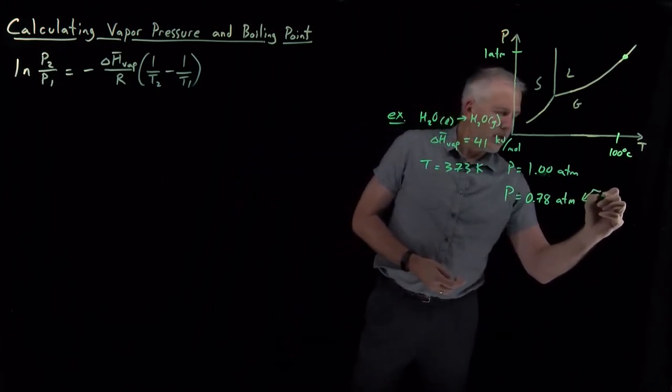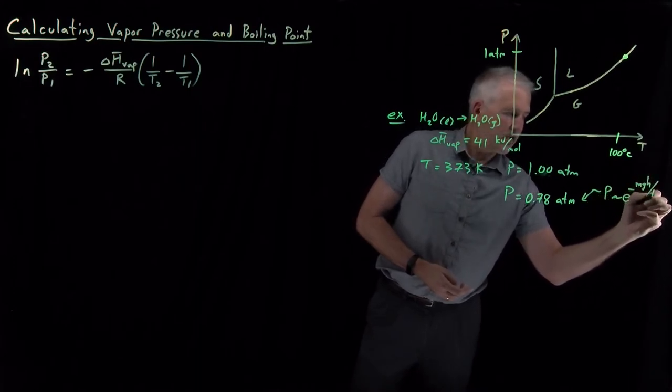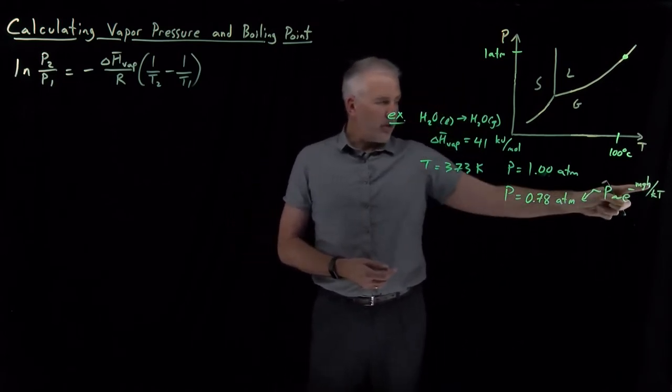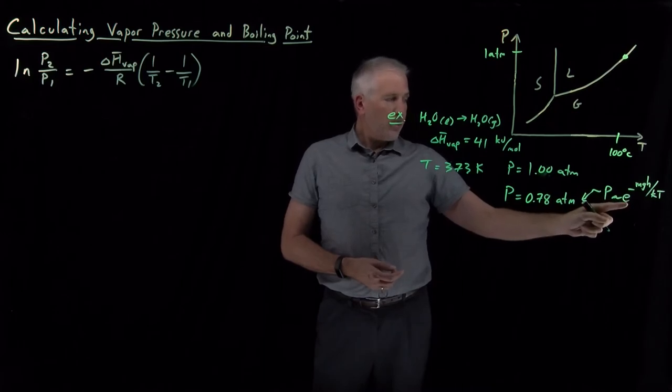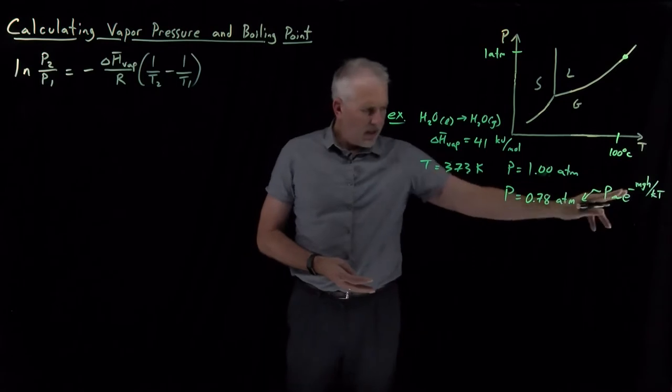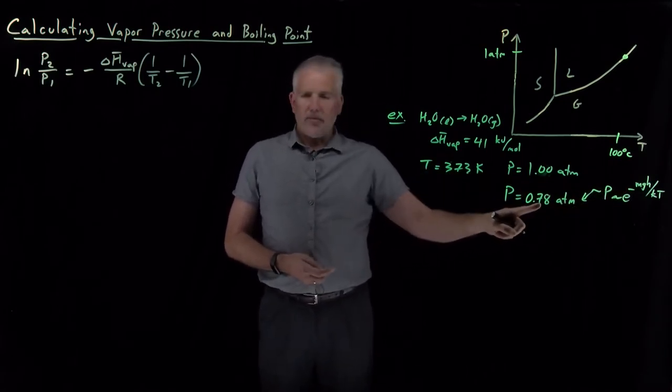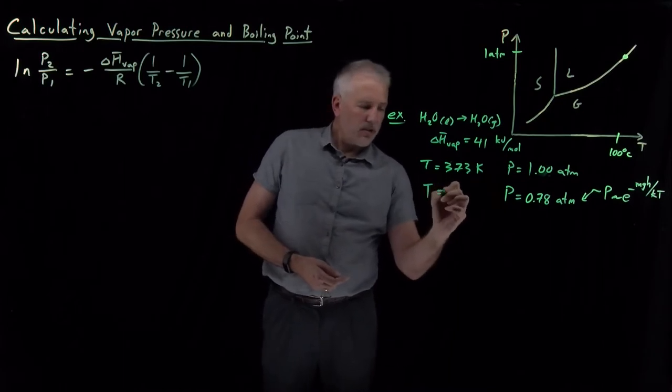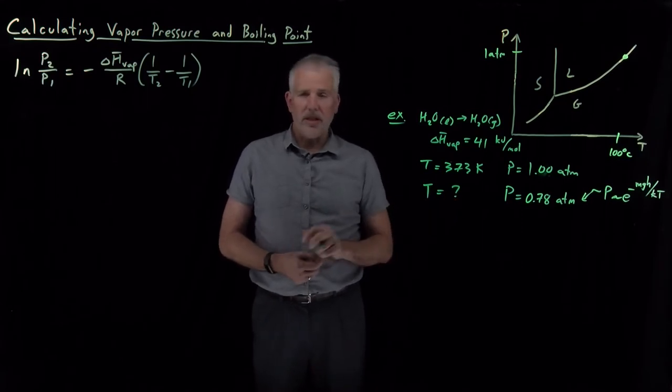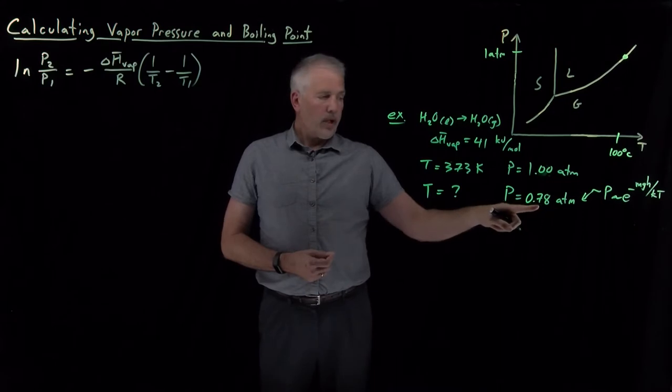Remember, from the Boltzmann distribution, the population of molecules in the air at some altitude h is related to the Boltzmann factor e to the minus energy, mgh, divided by kt. But I've done that work for you. I've told you that the barometric pressure at the top of Mount Mitchell is 0.78 atmospheres, and I would like to know at what temperature water boils. I'm going to boil myself some macaroni and cheese at the top of Mount Mitchell. What temperature will that water boil under that reduced pressure?